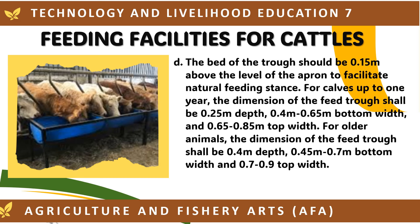The bed of the trough should be 0.15 m above the apron level to facilitate a natural feeding stance. For calves up to 1 year, the feed trough dimensions shall be 0.25 m depth, 0.4 to 0.65 m bottom width, and 0.65 to 0.85 m top width. For older animals, the dimensions shall be 0.4 m depth, 0.45 to 0.7 m bottom width, and 0.7 to 0.9 m top width.